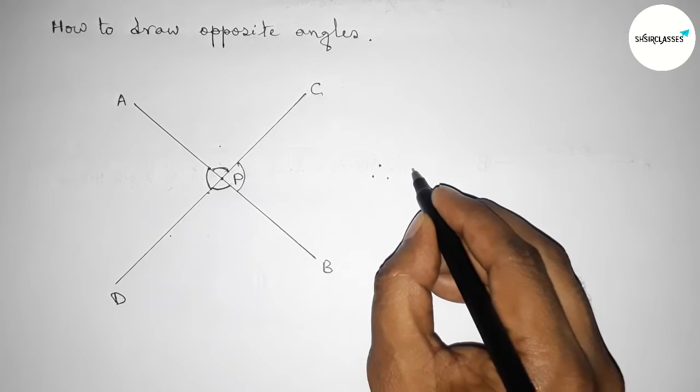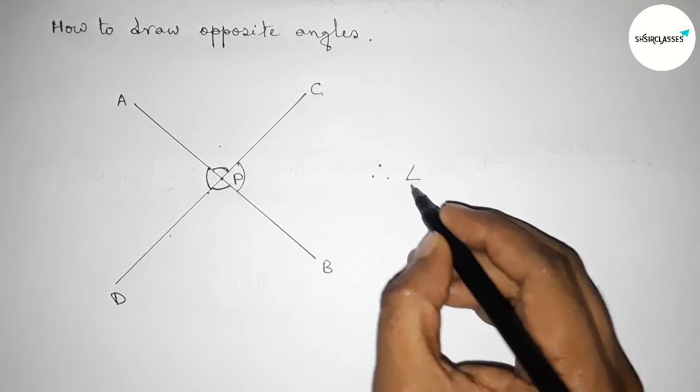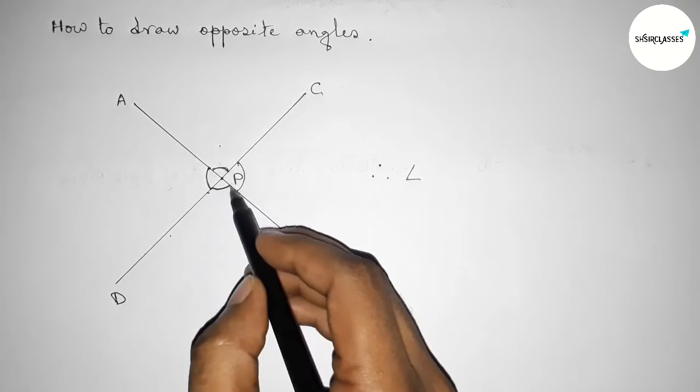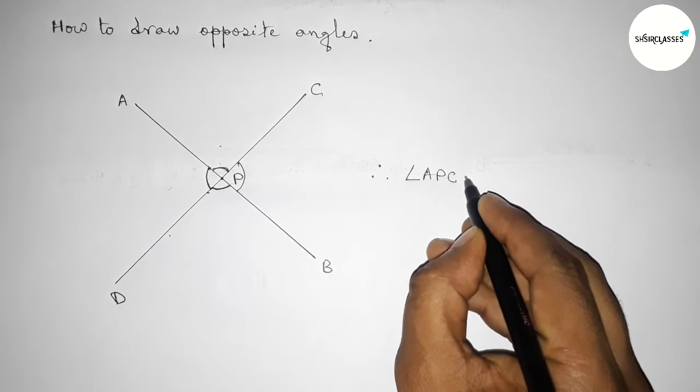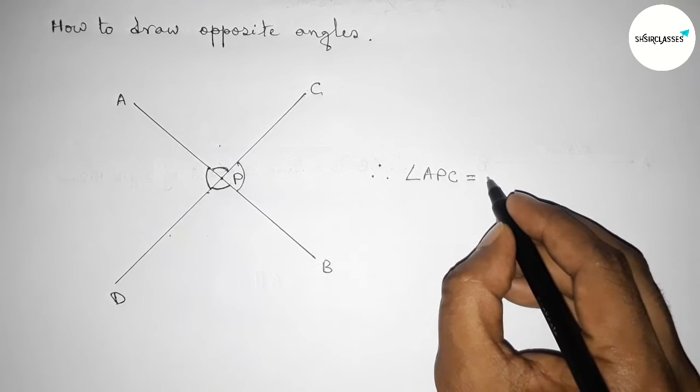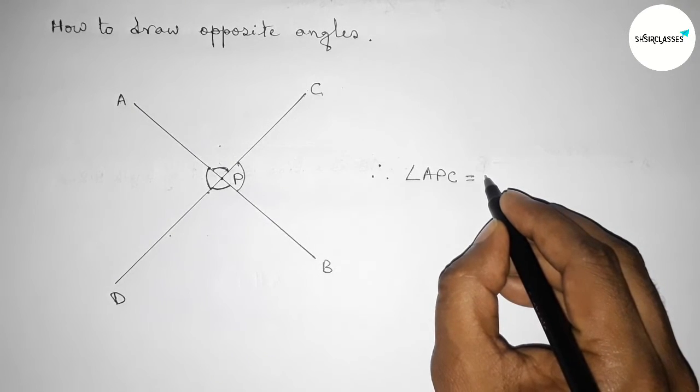So therefore, here I'm going to write down all the angles. So angle first APC - so APC equals to opposite - so the opposite of angle APC equals to angle BPD, so angle BPD.